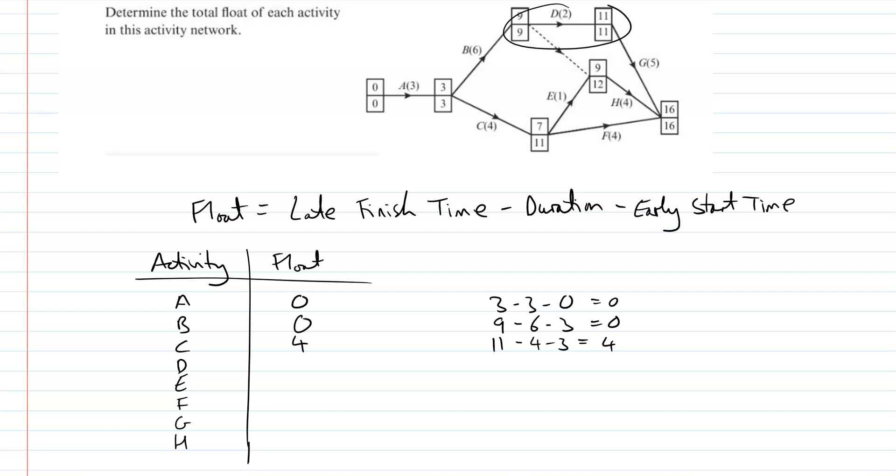Hopefully we're getting the idea of D. It looks critical to me, so it's going to have zero float, but just to make sure, 11 minus two minus nine, which is indeed zero. E is here. So E, we take the late finish time, which is 12, minus the duration, which is one, minus the early start time, which is seven.